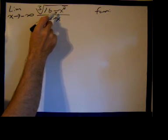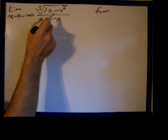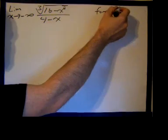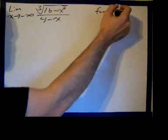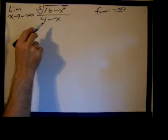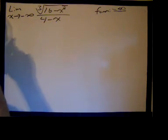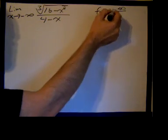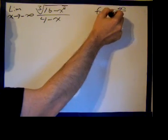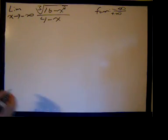As x goes to negative infinity, x squared goes to positive infinity times a negative. The cube root of a negative is a negative, so we get negative infinity on top. And in the denominator, negative infinity times negative is positive infinity. So this is in an indeterminate form — infinity over infinity, regardless of the signs.